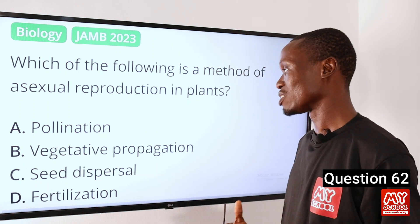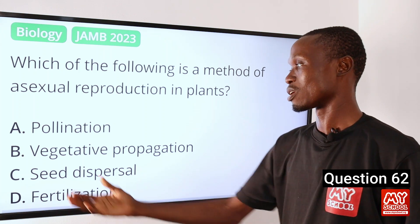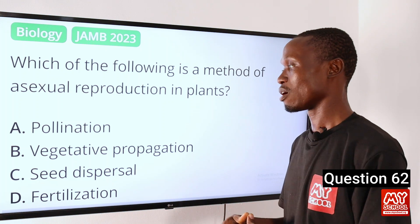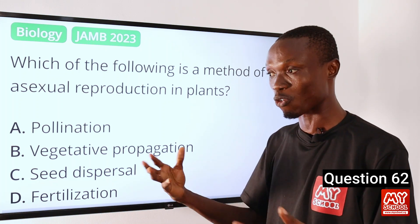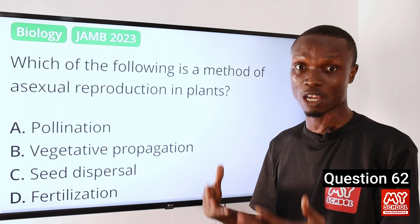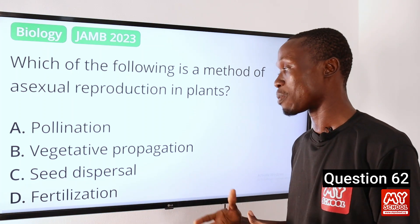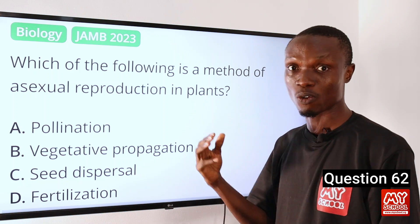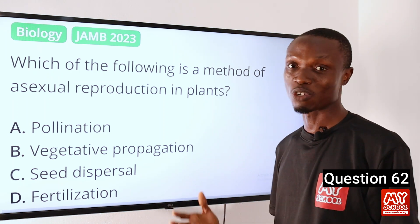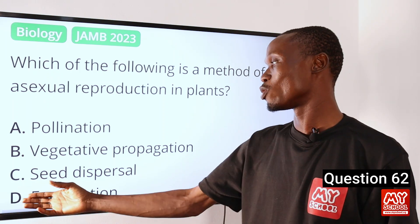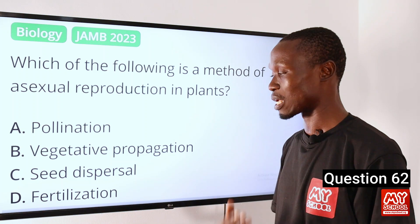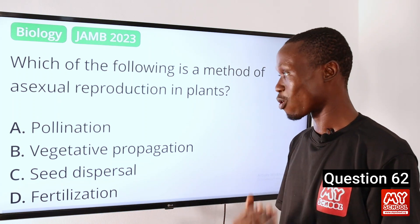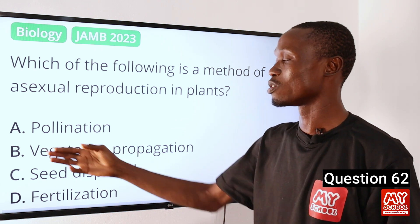B: We have vegetative propagation. C: We have seed dispersal — seed dispersal involves the movement of seed from one place to another, with agents such as man, animals, wind, water, and the explosive mechanism. D: Fertilization is the fusion of gametes to form a zygote. So the answer to this question is option B, vegetative propagation.